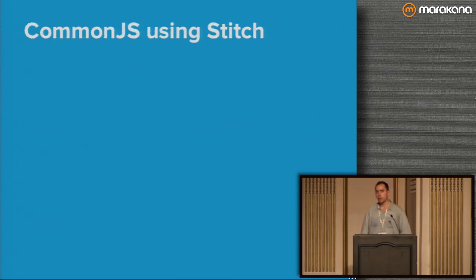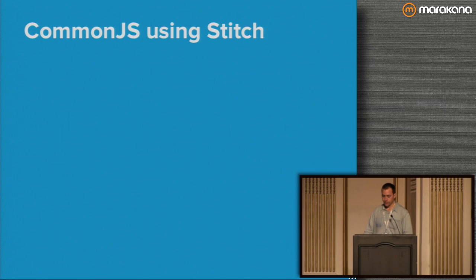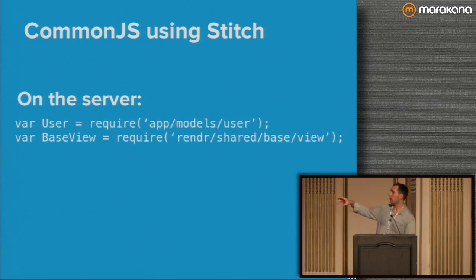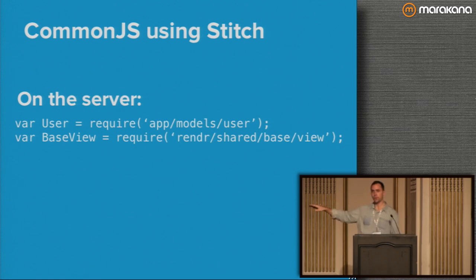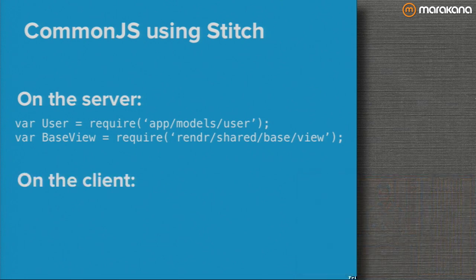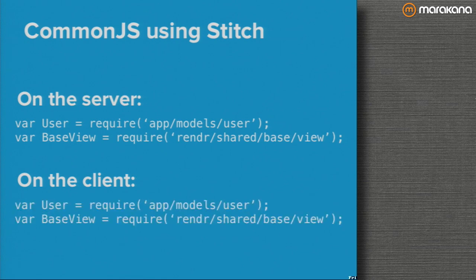One really neat part of this approach is using Stitch — similar to Browserify — which lets you package up your modules to use them in a CommonJS way on the client side. This allows us to use modules the same way on client and server. On the server you say `var user = require(path/to/user)`. Render ships as an npm module, so you can also require its internal modules like Base View. Using some Stitch trickery with Grunt in the deploy process, you can do the exact same thing on the client — you just think about the path to the module, no AMD required.